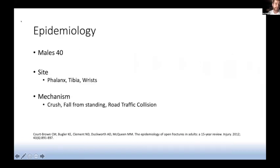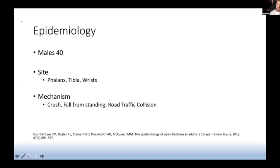A bit of stats about these injuries. The average patient we see is a male in his 40s. The finger is the most common site, followed by the tibia and ankle, and then the wrist. Work from colleagues in Edinburgh reports the most common mechanism for an open fracture is a crush injury, followed by a fall from standing, and then a road traffic collision.